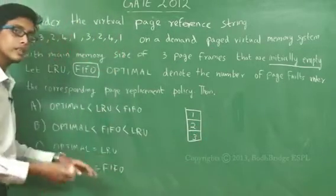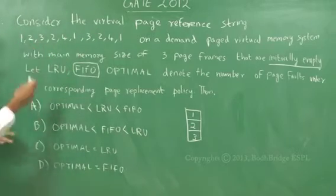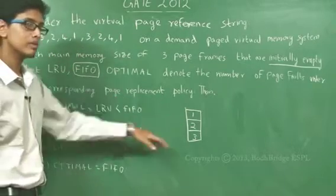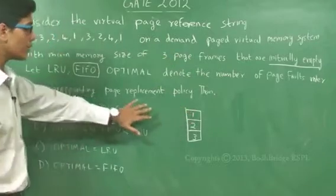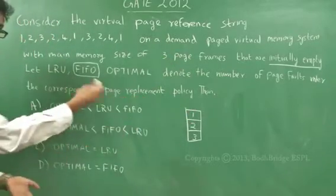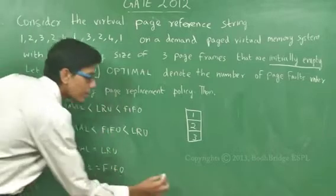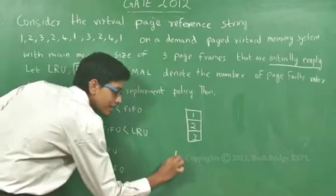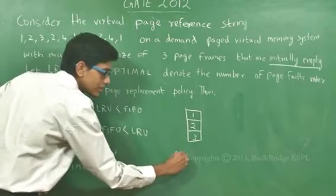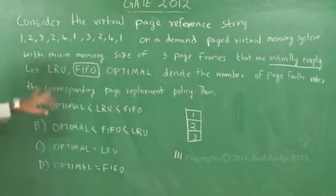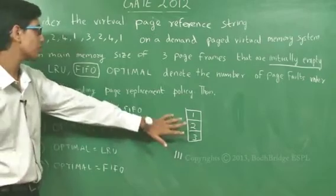A page fault occurs when you access a reference string element which is not there in main memory. Since the main memory was initially empty and you accessed three elements not present, all three count as page faults. 1 was a page fault, 2 was another page fault, 3 was another page fault. Next is 2, which is already there, so it is not a page fault.